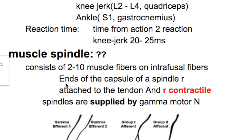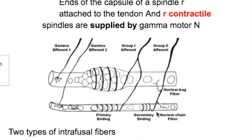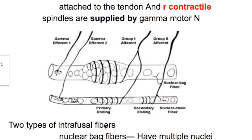The muscle spindle is present in the intrafusal fibers and consists of 2 to 10 muscle fibers. The ends of the capsule of a spindle are attached to a tendon and are contractile, whereas the center is not contractile because it lacks actin and myosin. These spindles are supplied by the gamma motor neurons.